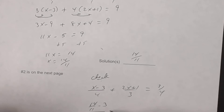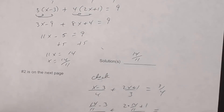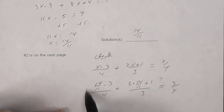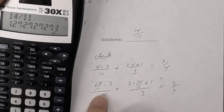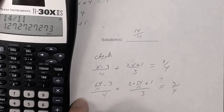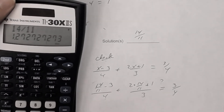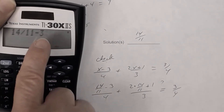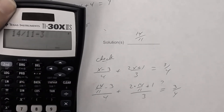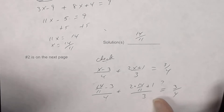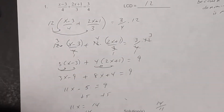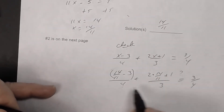Using a calculator, type in (14/11 minus 3) divided by 4, plus (2 times 14/11 plus 1) divided by 3. Be careful to put the numerators in parentheses so you divide the entire numerator by the denominator, not just the last term.